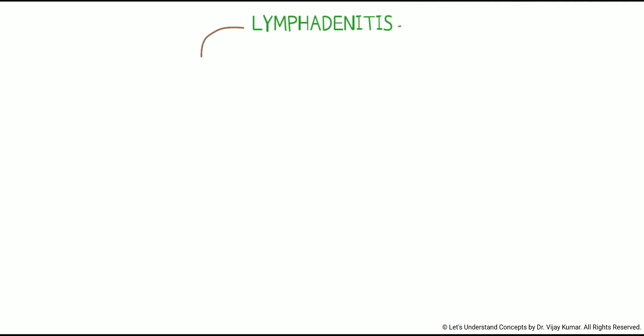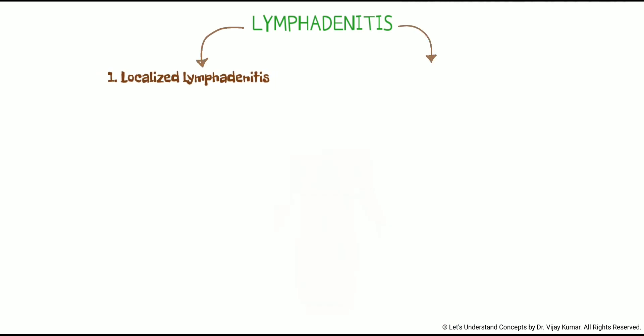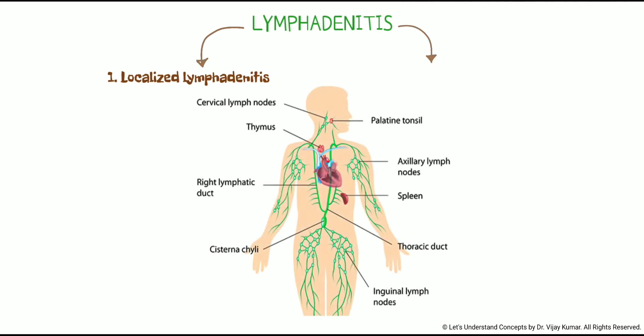Lymphadenitis is of two types. First, localized lymphadenitis. This is the most common type. It involves one or just a few nodes that are close to the area where the infection started. For example, nodes enlarged because of a tonsil infection may be felt in the neck area.